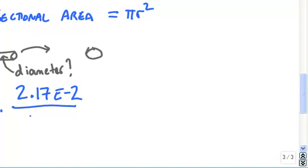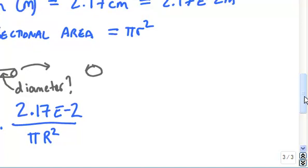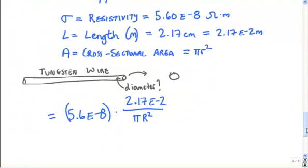And on the bottom, we'll go ahead and put the values in of pi r squared. And then the resistance value that they give us is 0.393.